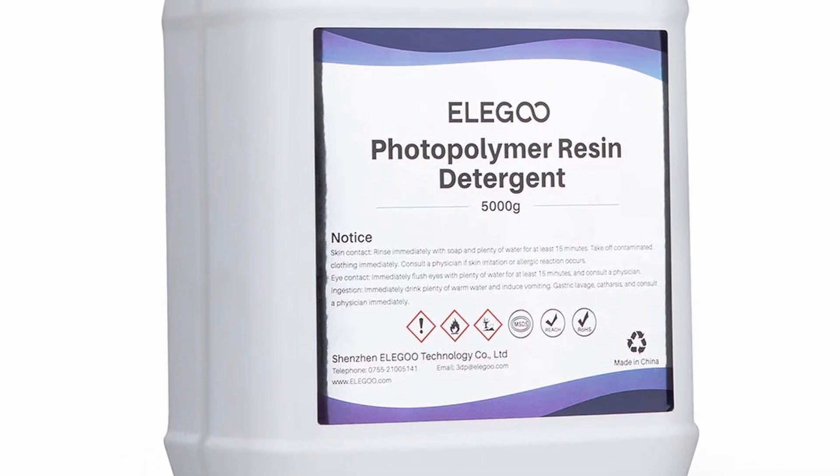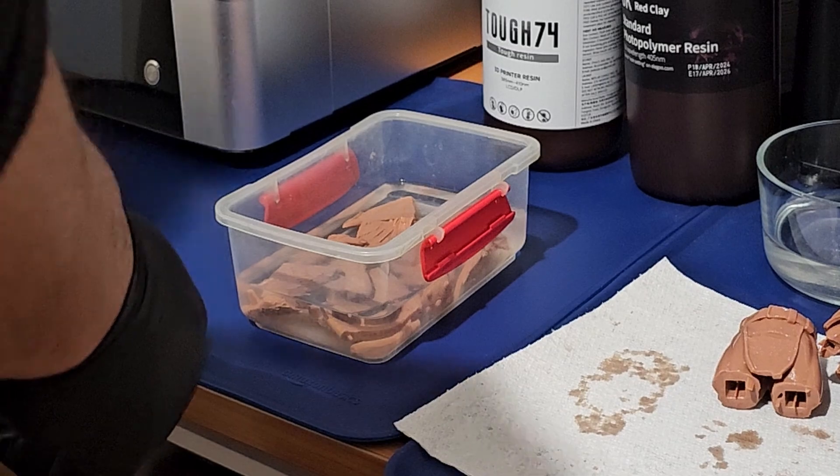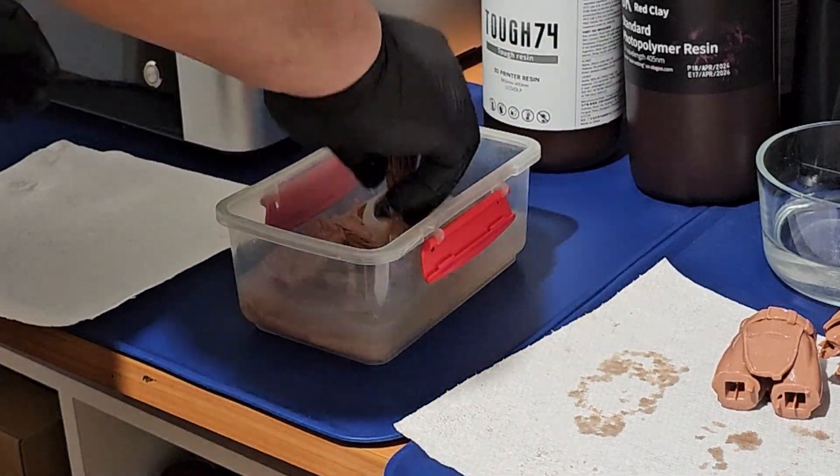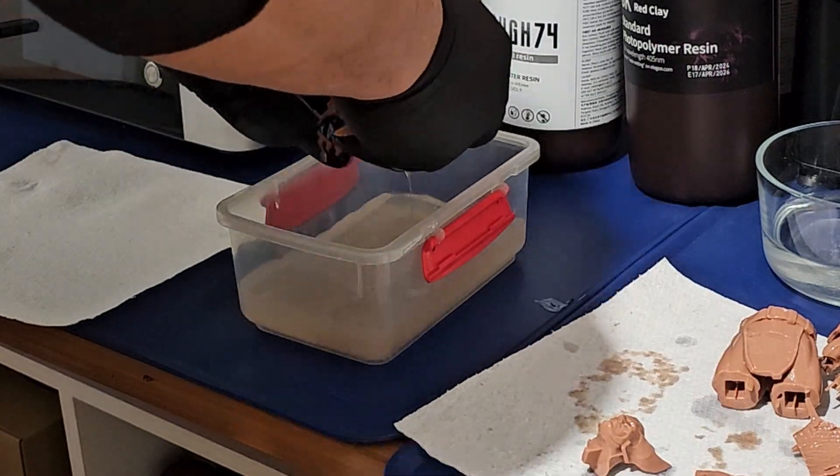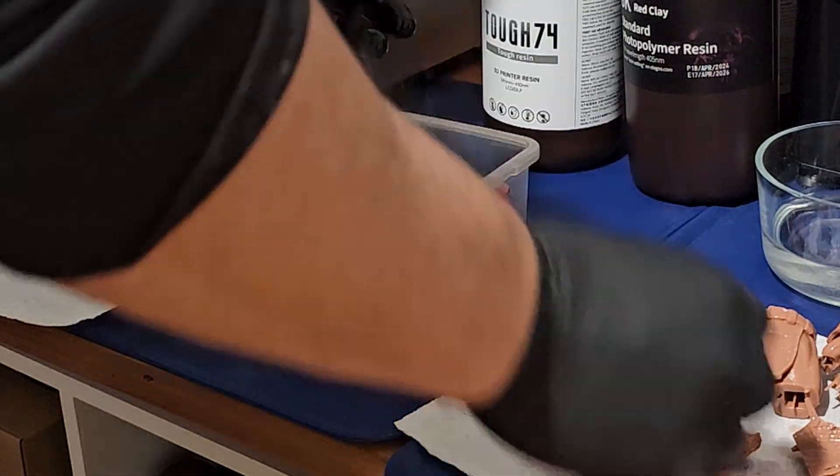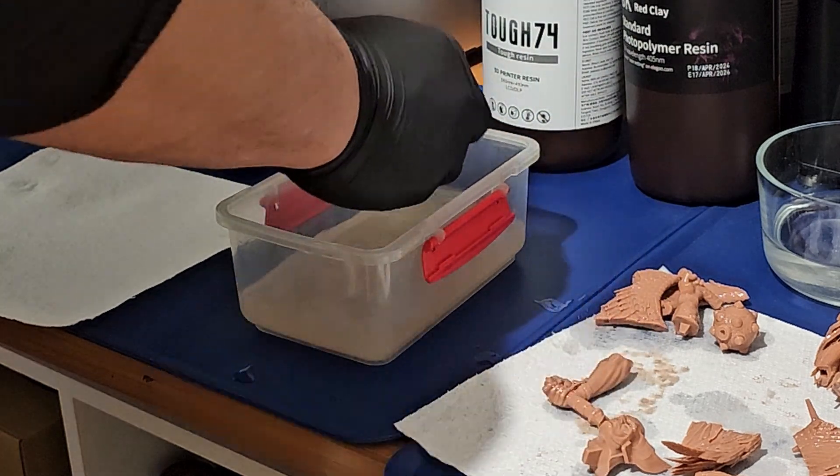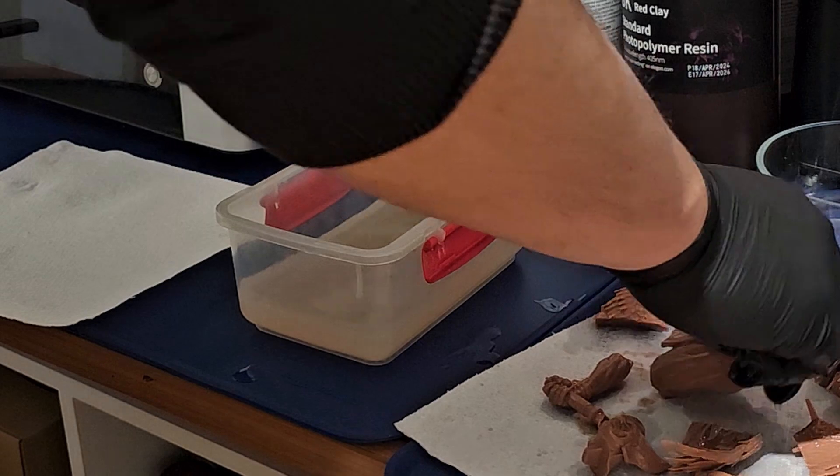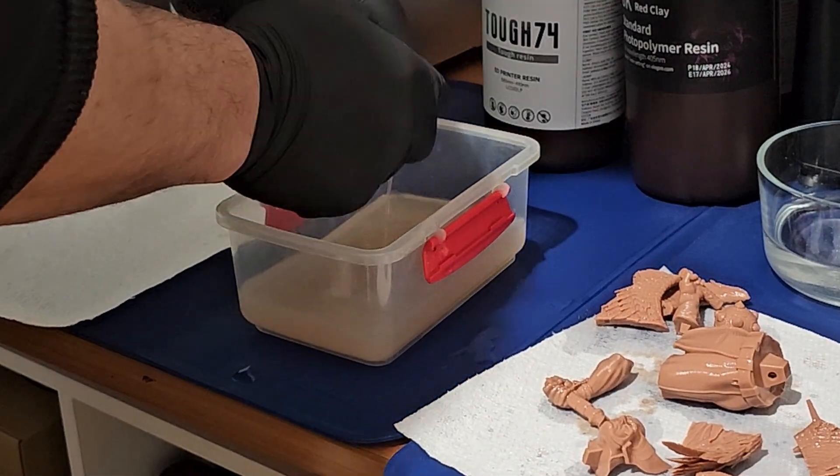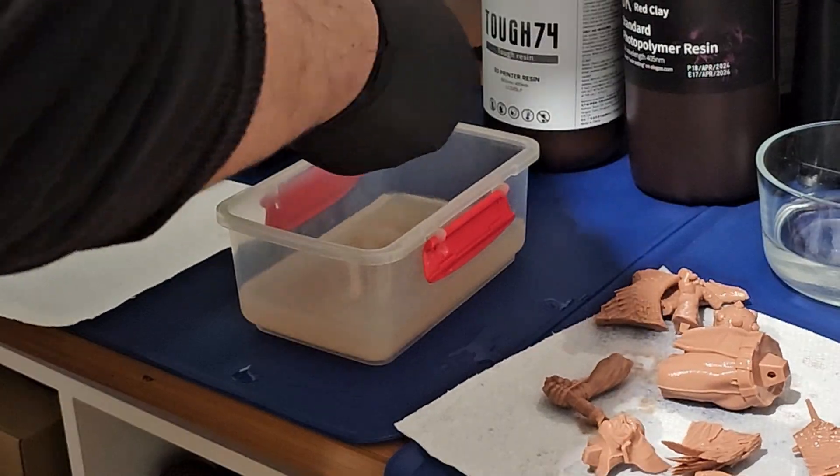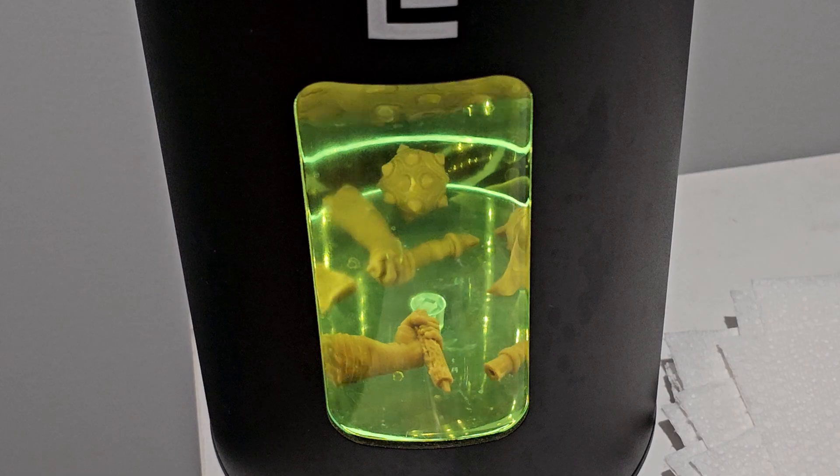Now, the resin detergent is a mixed bag. 5 liters of IPA would run me about $20 to $25 US dollars, which is less than half the price of the Elegoo resin detergent. The smells of the detergent are definitely more tolerable, and the results in terms of cleaning are great. I also found that the detergent gets less cloudy and clumpy compared to IPA with the same amount of use. However, the detergent takes longer to dry as compared to IPA, which could be a good thing or a bad thing depending on the scenario. The slippery after-effect of the detergent on the parts is slightly jarring, as it is not the same slippery as an uncleaned resin, but it still feels like you're not done cleaning. So with all that being said, I simply cannot recommend the detergent because of the price.